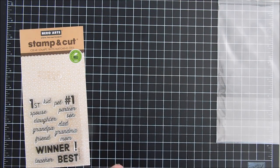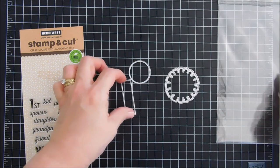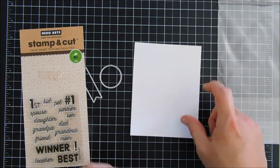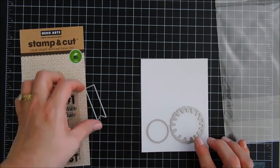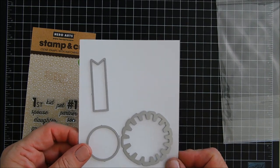The stamp and cut set is actually called Winner Number One. The dies in here are three pieces. We're going to start by cutting each one of these pieces out twice. Now the smaller circle you can only cut out once, but I thought since I was die cutting, I might as well cut everything two times in case I made an error.